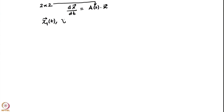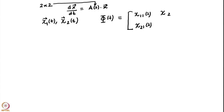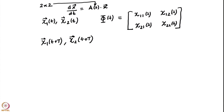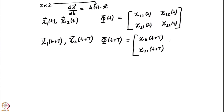I will call them χ₁(t) and χ₂(t). The fundamental matrix φ(t) for this system would be just a 2×2 matrix. We know that if χ₁, χ₂ are solutions then so are χ₁(t+T) and χ₂(t+T). So I can get one more fundamental matrix φ(t+T). You can see that these two are linearly independent.